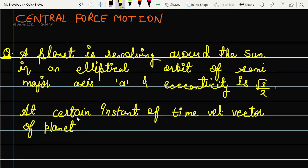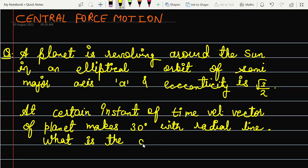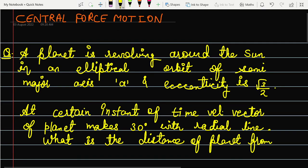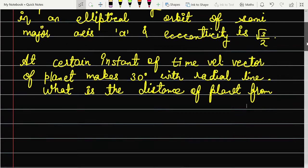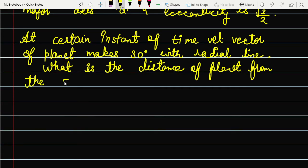The velocity makes 30 degrees with the radial line. You have to find out what is the distance of the planet from the sun. I hope the picture is clear and you are able to see what the question is asking.